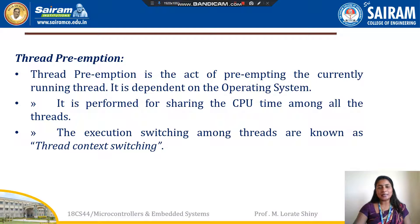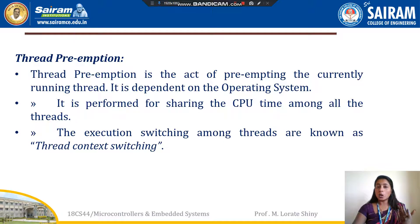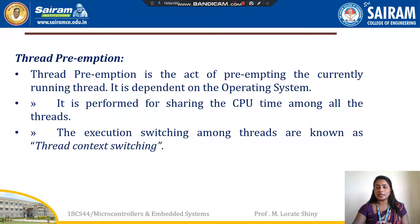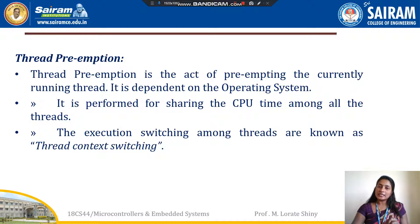Thread Preemption. In the operating system, thread preemption is nothing but the act of preempting the currently running thread — means temporarily stopping the execution of a thread. It depends on the operating system. The use of thread preemption is sharing the CPU among all the threads. We can switch the execution of one thread to another thread. The process of switching one thread to another thread is called Thread Context Switching. This Thread Context Switching depends on the operating system scheduler and the type of thread.